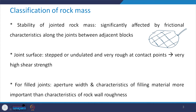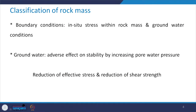As far as filled joints are concerned, it is not the roughness which will be important, but the aperture width and the characteristics of the filling material which will be more important compared to the rock wall roughness. The third category used for classification of rock mass includes boundary conditions, which consists of in-situ stresses within the rock mass and groundwater conditions.